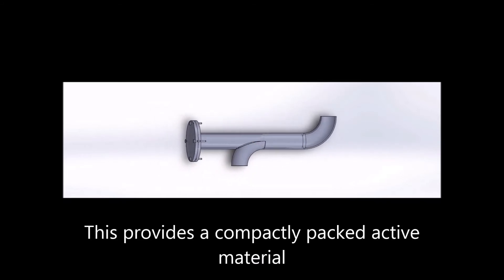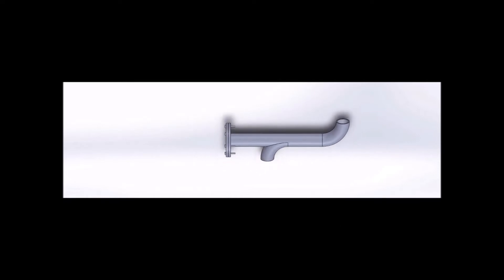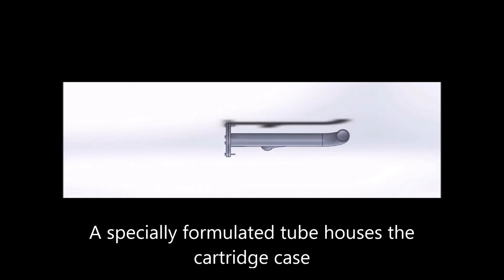The cartridge case along with the cartridge are then inserted into a specially formulated tube designed with two elbows. One elbow is the water inlet while the other one is the water outlet.